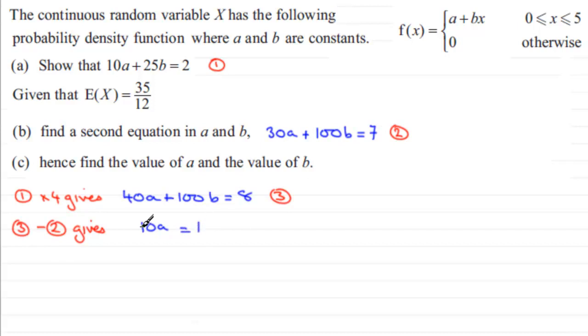And so 10A equals 1. If we divide both sides by 10, you end up with A equaling 1 tenth, or as a decimal, 0.1.